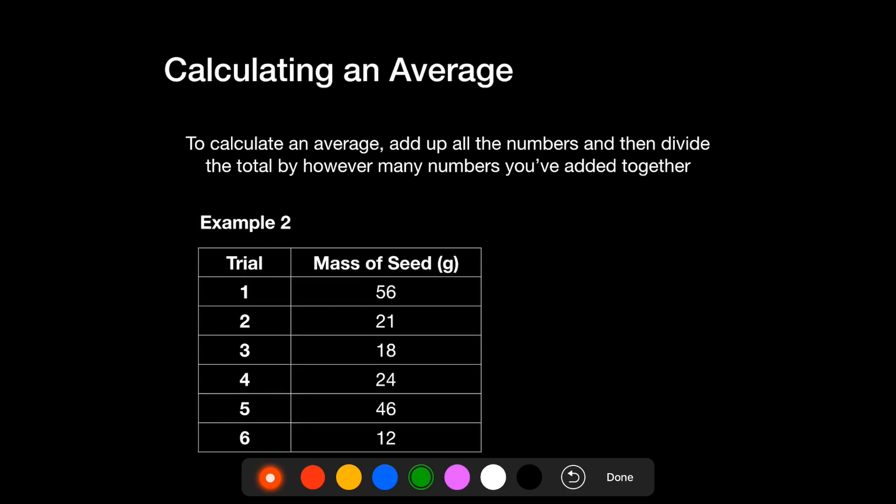In the next example, you can pause and give this a go yourself, and then I'll walk through how you're meant to do this. So in this case, we have seed mass instead of leaf width, and this time we have six trials. But we still just add them all up together. So 56 plus 21 plus 18 plus 24 plus 46 and plus 12.